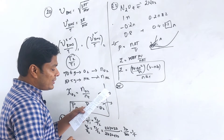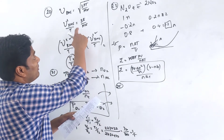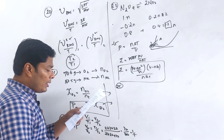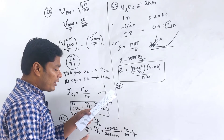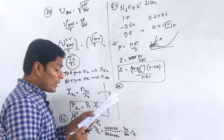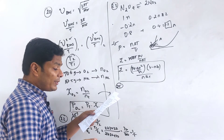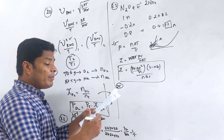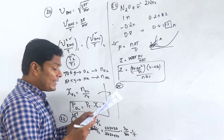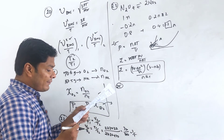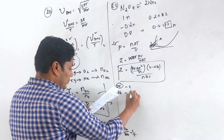Question 25: Ratio of RMS velocity of oxygen to ozone at 27°C. ν_RMS ∝ 1/√M. Molecular weight O2=32, O3=48. Ratio = √(48/32) = √(3/2). Question 26: Temperature raised from 27°C to 927°C — similar pattern gives option D.